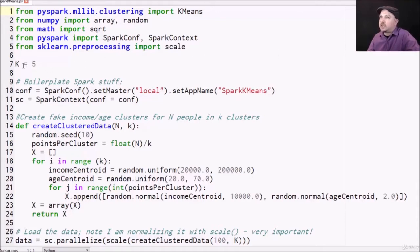All right, let's go ahead and set things up. So I'm going to set a global variable k to 5. So I'm going to run k-means clustering in this example with a k of 5, with five different clusters.